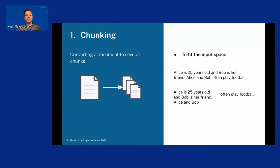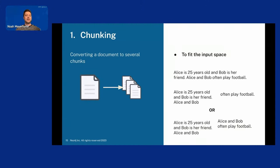What we did to solve this was keep some of the text from the previous chunk in the next chunk. So instead the second chunk would keep 'Alice and Bob often play football' — in that case it would make sense. We keep around 300 characters from the previous chunk and carry it into the next chunk.